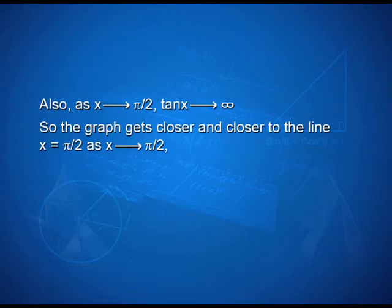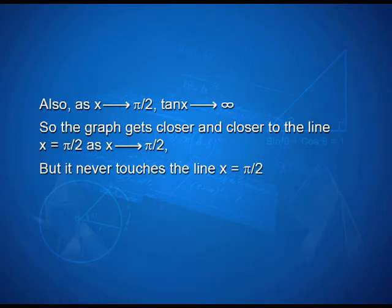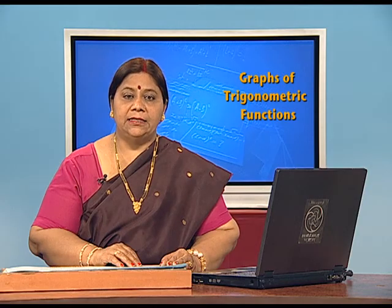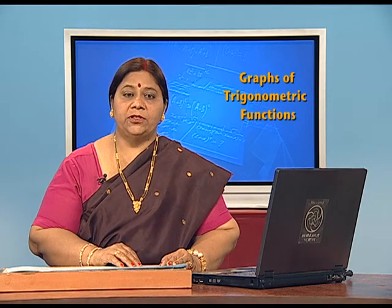As x tends to pi/2, tan x tends to infinity. So the graph gets closer and closer to the line x = pi/2 as x tends to pi/2, but it never touches the line x = pi/2. Since tan(−x) = −tan x, if (x, tan x) is any point on the curve y = tan x, then (−x, −tan x) will also be a point on it. This means the graph is symmetric in opposite quadrants.